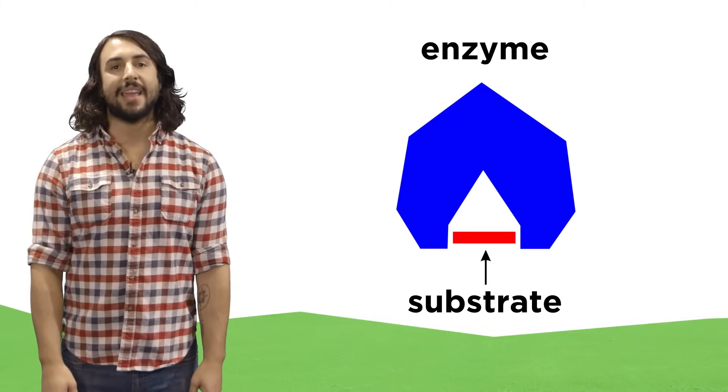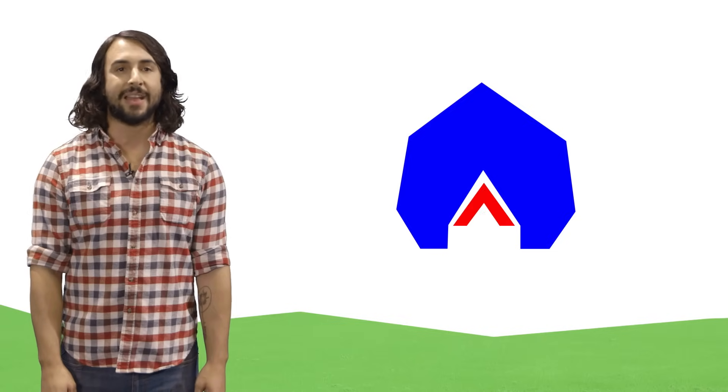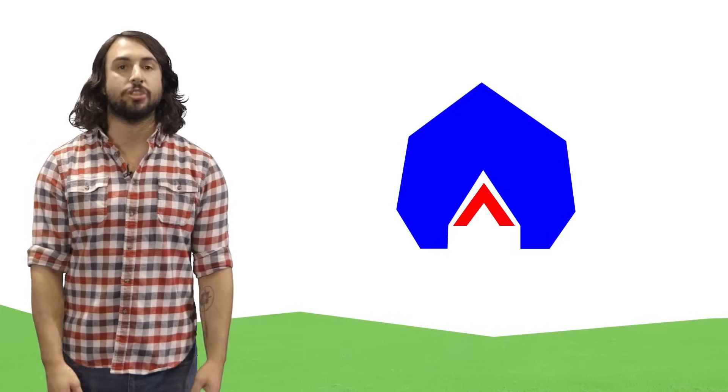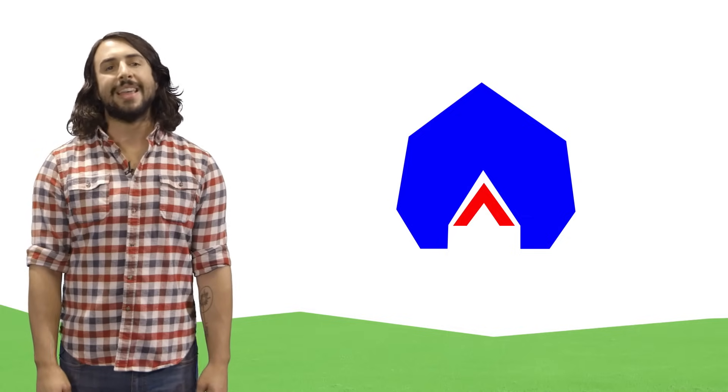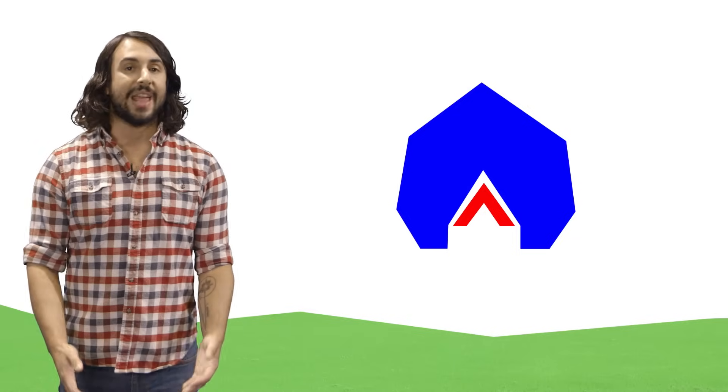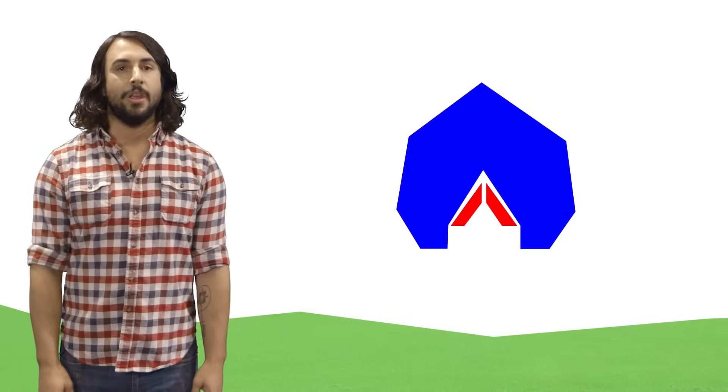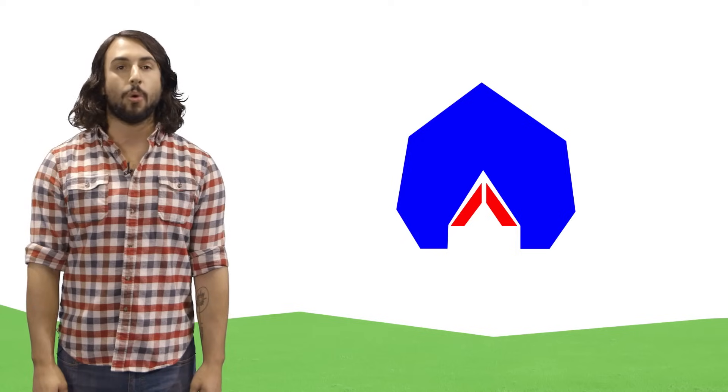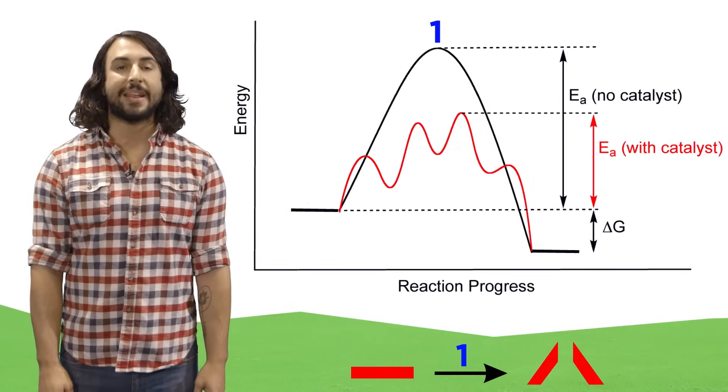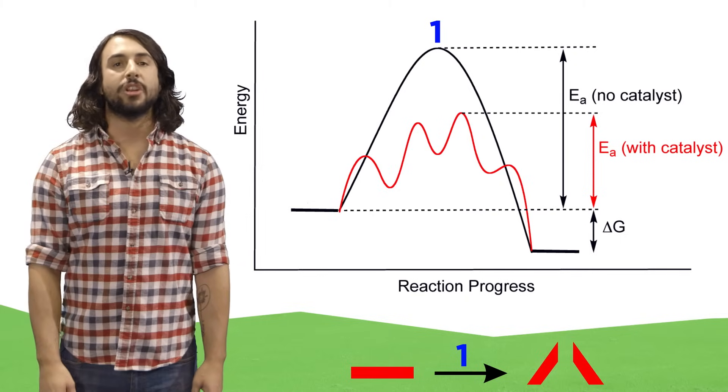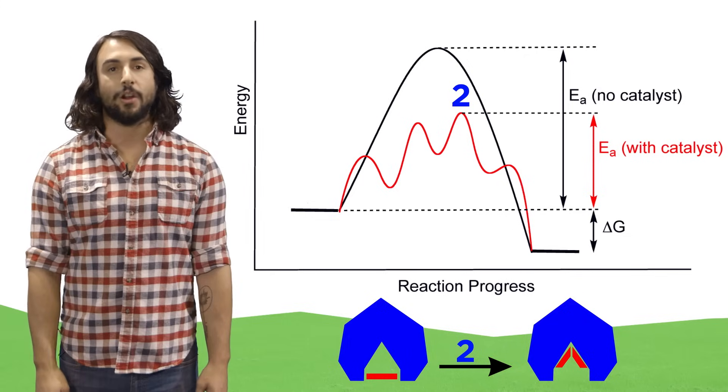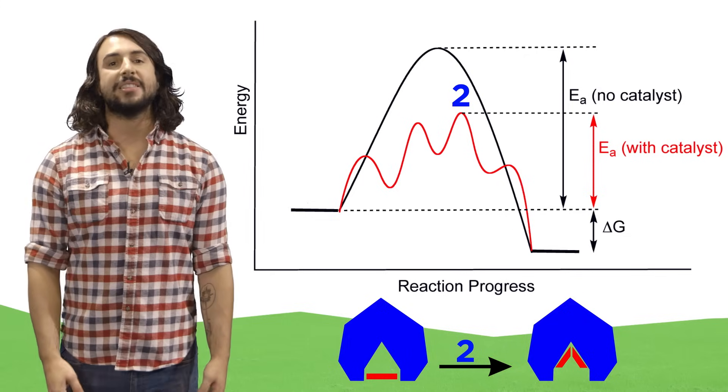One possibility is that the enzyme causes the substrate to bend in a particular way, which it will do in order to make certain interactions with the enzyme, and when in this bent configuration, some of the bonds become weaker and easier to break. This is one way the enzyme qualifies as a catalyst. The molecule would have a hard time breaking apart on its own, but in the conformation induced by the enzyme, the activation barrier associated with the reaction is much smaller.